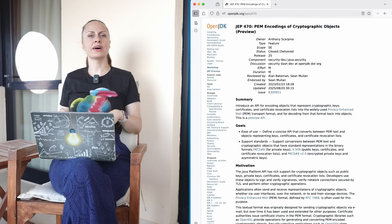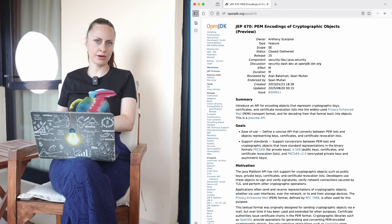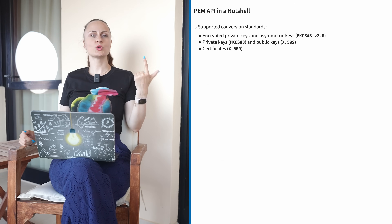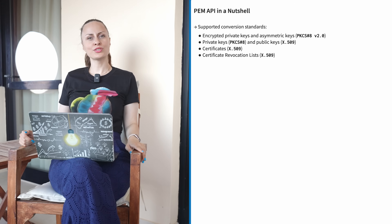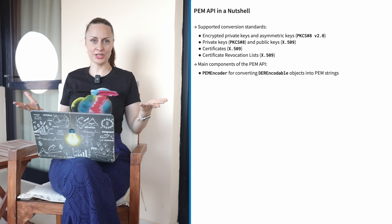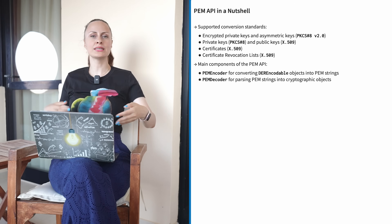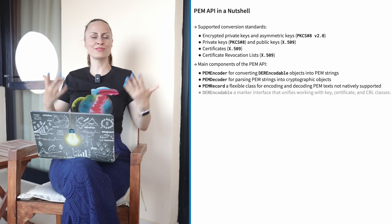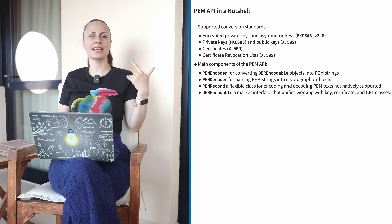Another necessity in modern applications is integrating with auth providers or generating JWTs. Java has long supported these objects in binary formats like PKCS8 and X509, but handling PEM — privacy-enhanced mail formats — has been clunky. With JDK 25, Java introduces a preview API for encoding and decoding cryptographic objects to and from PEM format. This API includes support for private and public keys, certificates, and certificate revocation lists. The new API follows familiar Java idioms and is thread-safe, immutable, and cleanly separated into PEM encoder for converting encodable objects into PEM strings, PEM decoder for parsing PEM strings into cryptographic objects, PEM record — a flexible class for decoding types that are not natively supported — and DER encodable, which is a marker interface that unifies keys, certificates, and CRL classes.